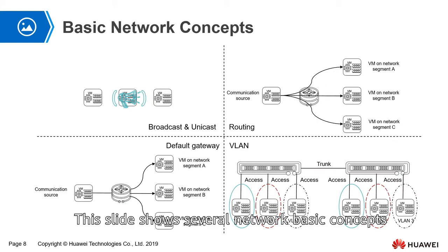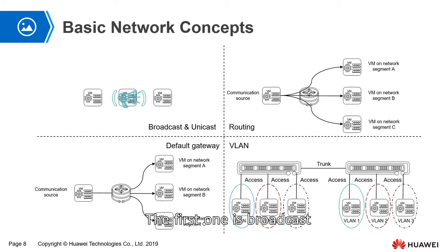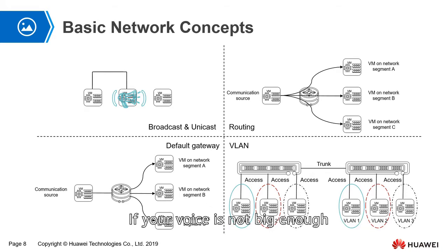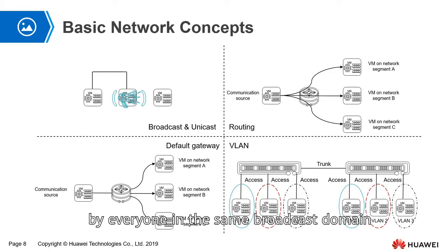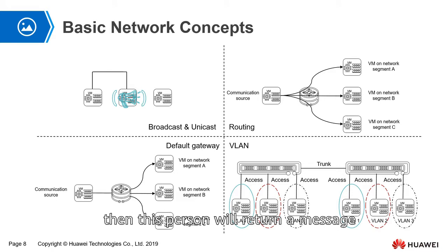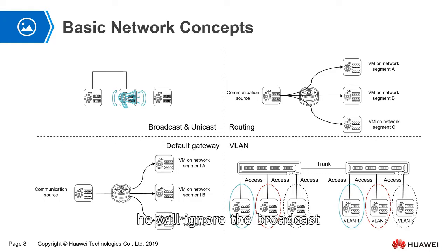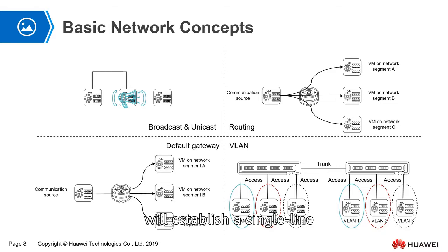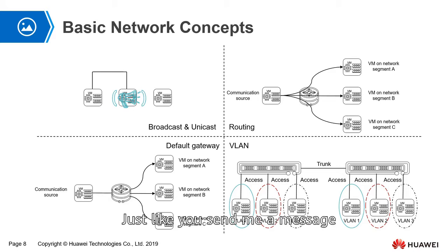This slide shows some basic network concepts. The first one is broadcast and unicast. As the name suggests, broadcast is like speaking out loud — if your voice is not big enough, you can use a speaker. The broadcast can be heard by everyone in the same broadcast domain. If a person finds that the broadcast is looking for them, they will return a message; otherwise, they will ignore it. After a response is returned, the broadcaster and that person establish a single-line contact and can talk privately — you send a message and I send one back. This method is called unicast.